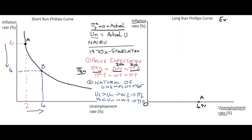We're now going to say that the government — perhaps on the run-up to an election — starts a policy of expansionary fiscal policy: spending increases, taxes may reduce, aggregate demand increases, and that creates jobs, reducing the unemployment rate to two percent. Bear in mind this is the actual rate; the natural rate is still at four percent. When actual unemployment is this low, there's a scarcity of workers, wage demands increase, and hence inflation increases — let's say inflation now rises to two percent.